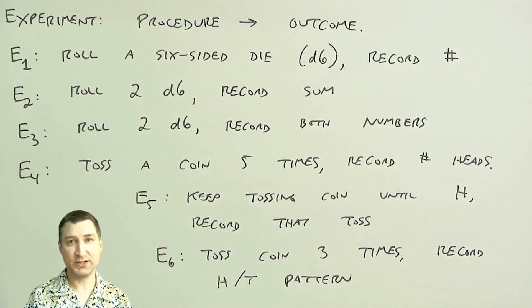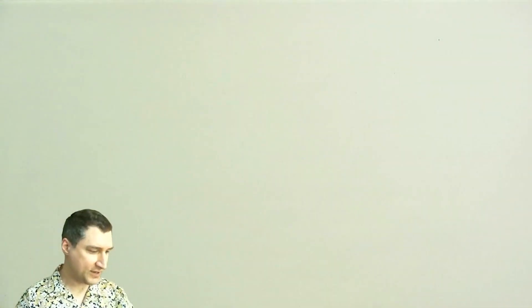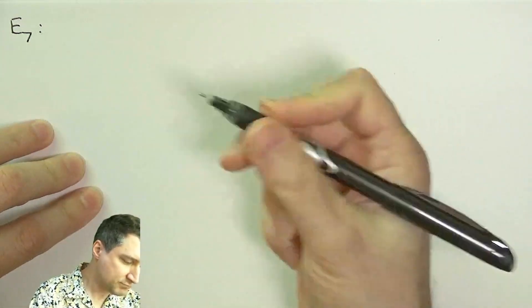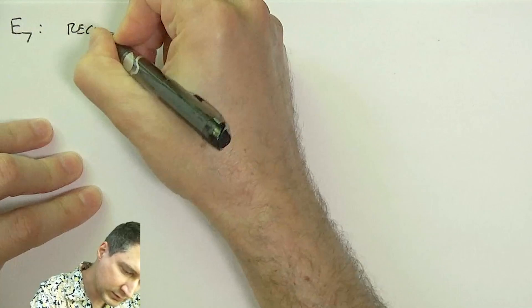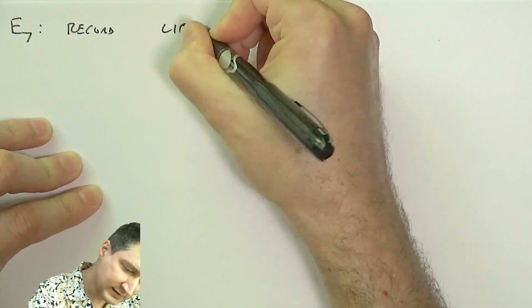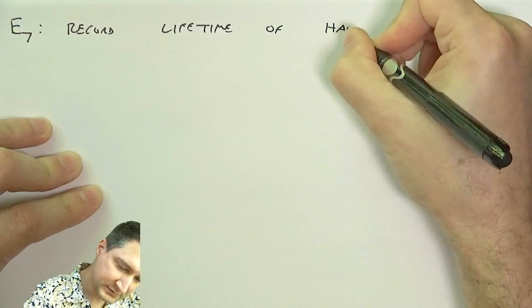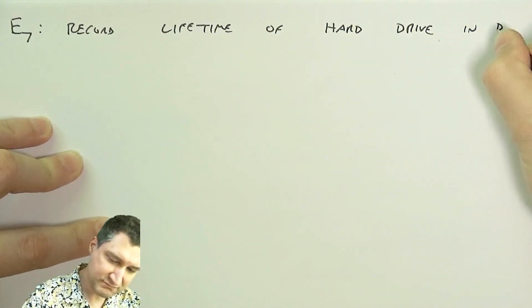But there are lots of probability problems where we have a continuous outcome. So, for example, I could say something like I could record the lifetime of my hard drive in days.